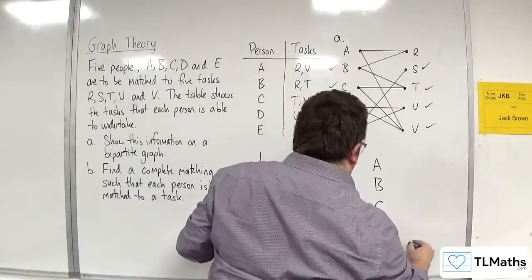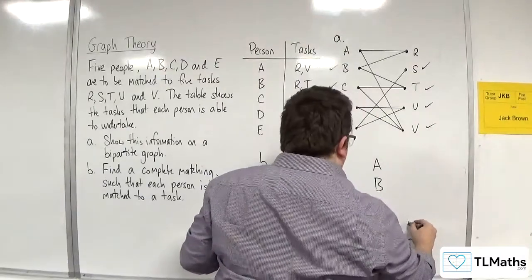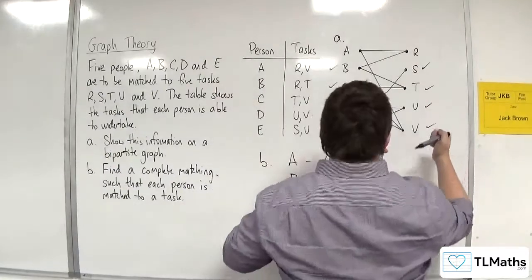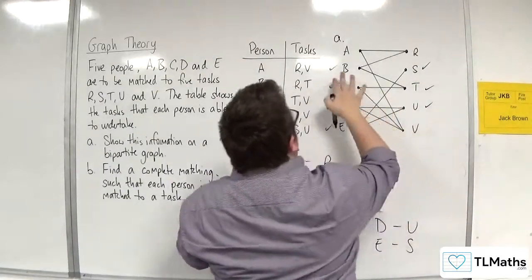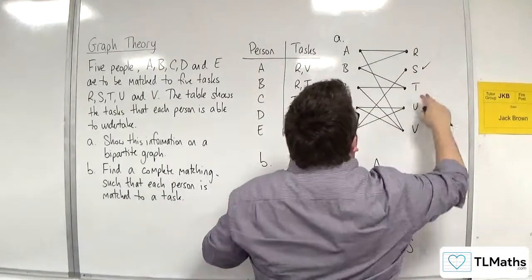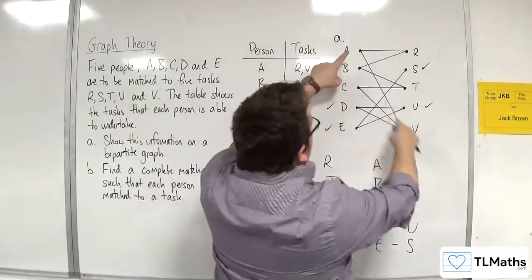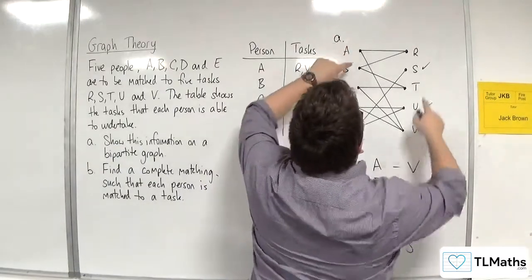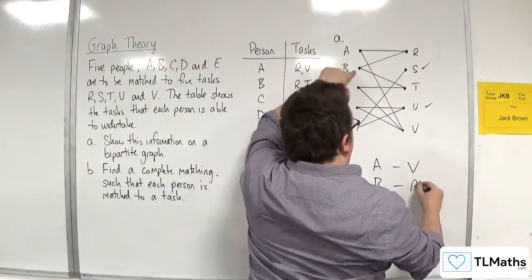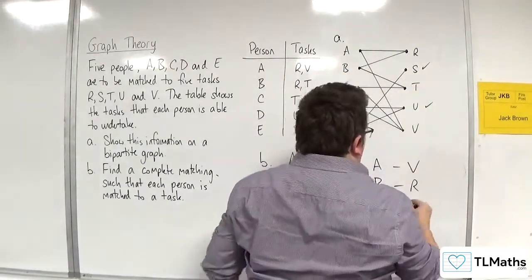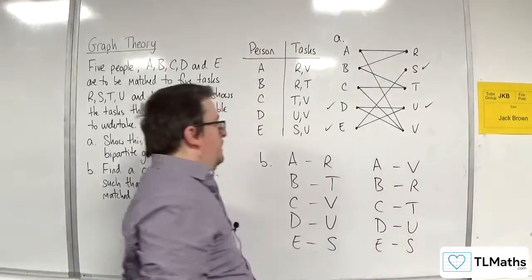Or alternatively, we were forced with D and E to have U and S. If instead we'd had A and V, then we would have had B and R, and then C with T.